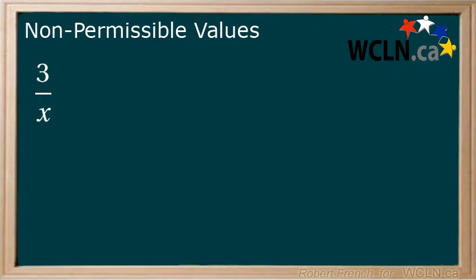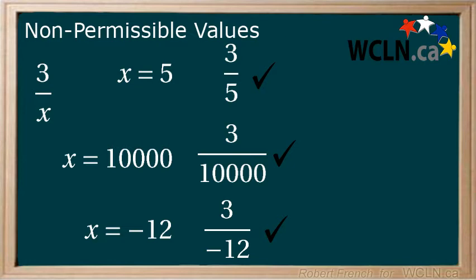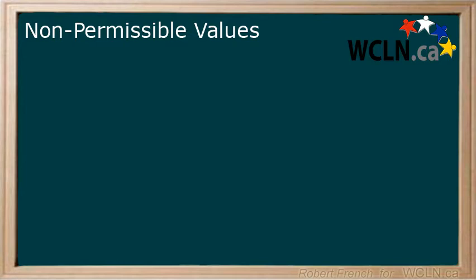Now consider this: 3 divided by x. We have not set any condition on x, so at this point in time, it could equal anything. It works if x equals 5, or 10,000, or negative 12, or any number of other possibilities. It does not work though, if x equals 0.